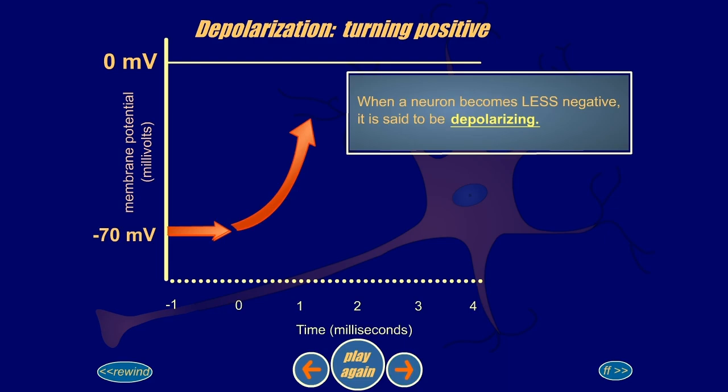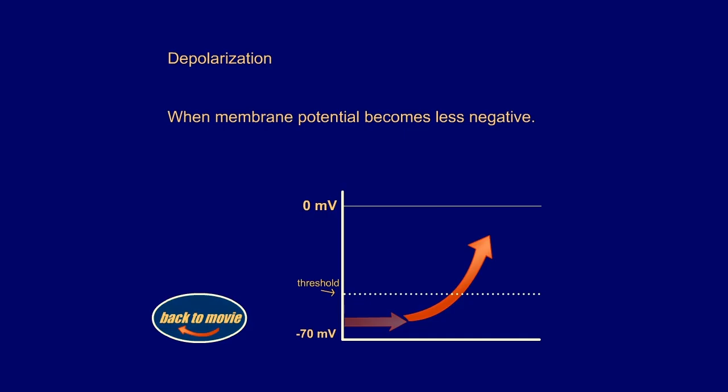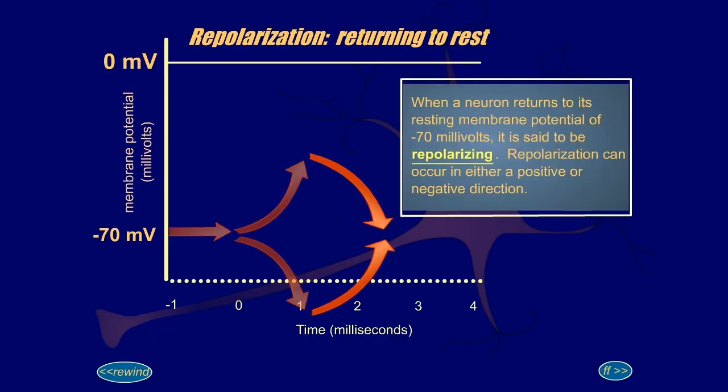When a neuron becomes less negative, it's said to be depolarizing. When a neuron returns to its resting membrane potential of negative 70 millivolts, it is said to be repolarizing. Repolarization can occur in either a positive or negative direction.